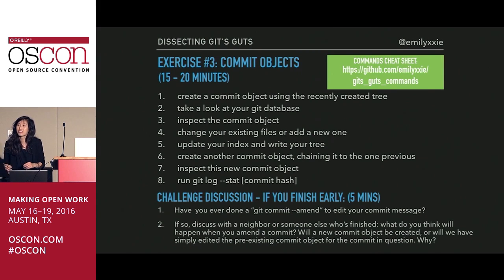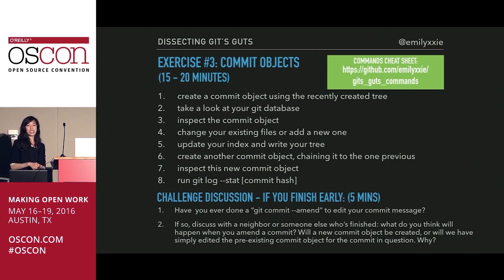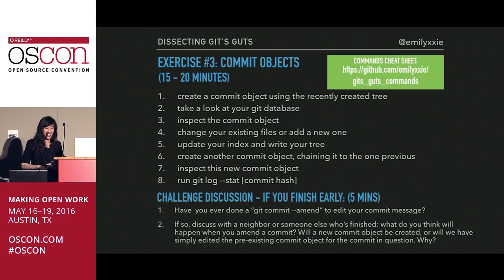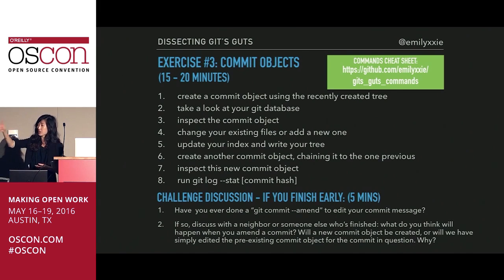This prior commit object with the old message will still exist in the objects database — it just kind of dangles around completely useless, and eventually gets removed. You could use reflog to pull that out. Yes, that is absolutely correct — reflog is your go-to whenever stuff like this happens. It is a useless object, but eventually gets removed during a garbage collect, which we'll go into further in detail in a bit.